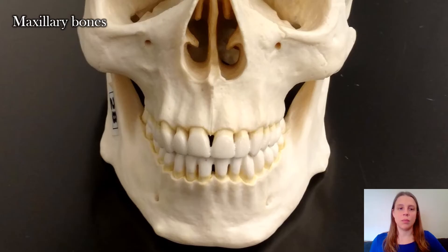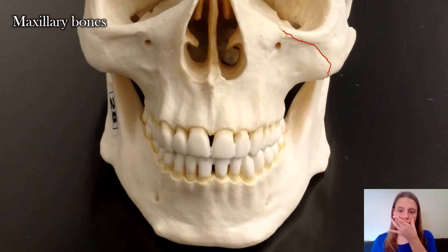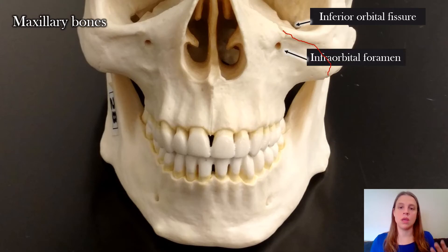Coming down the face to your maxillary bone — the little sutures are how you know when one bone stops and another bone begins. The middle bone is your maxillary bone and your cheekbone is your zygomatic. The crack in the bottom of your eye socket is the inferior orbital fissure, and then you have the infraorbital foramen.